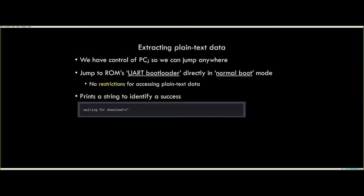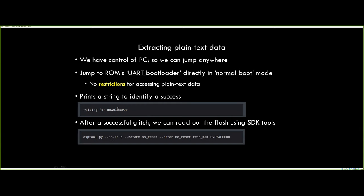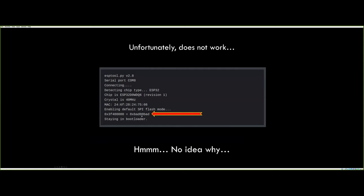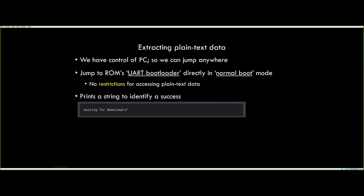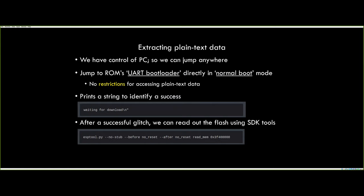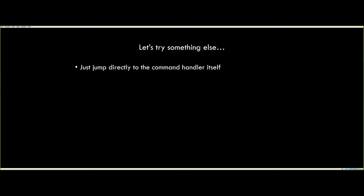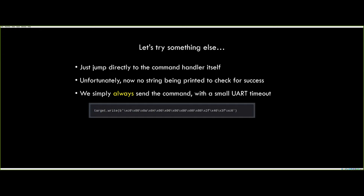We have control of the program counter but no access to plain text data. We can run our pointer and code, and we would like to extract plain text data. We first tried jumping to a ROM location that prints 'waiting for download' — the USB bootloader waiting to receive code. After a successful glitch, we look for this string. However, this didn't work — jumping there makes some additional checks or doesn't set the MMU properly. So we tried jumping directly to the command handler instead, bypassing any initialization prints. We just send commands and check if we get responses. This worked — we are now able to access the plain text data.